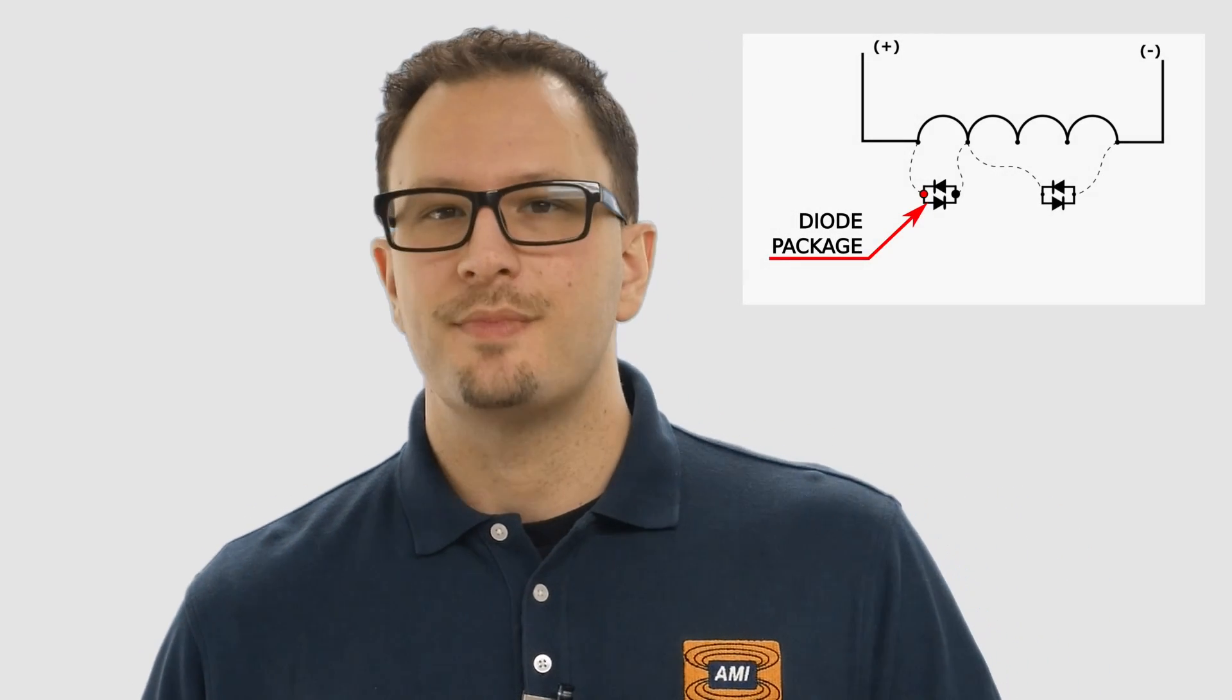These protection diodes are a package of two diodes connected in anti-parallel, which is basically anode to cathode. Depending on the size of your magnet, you could have one diode package or you could have several.